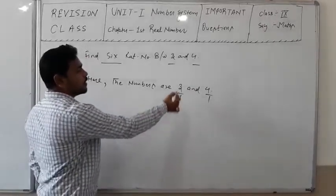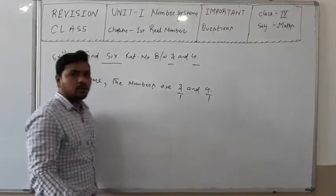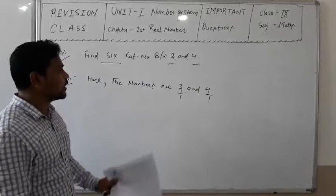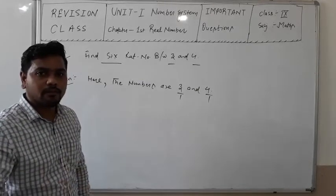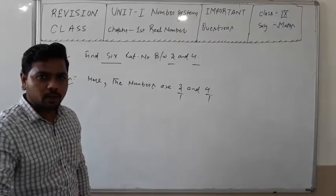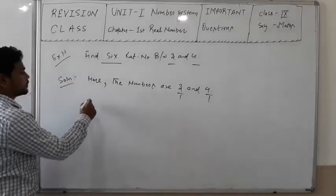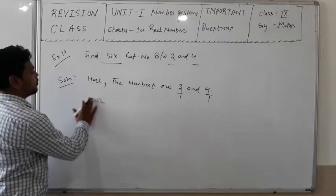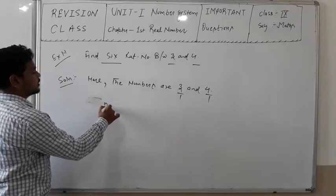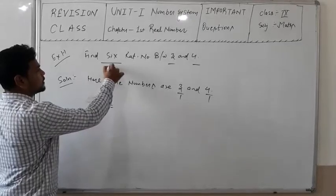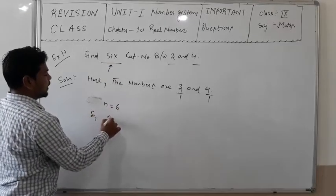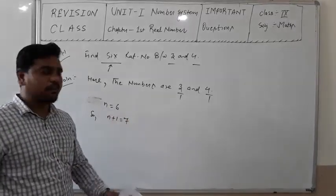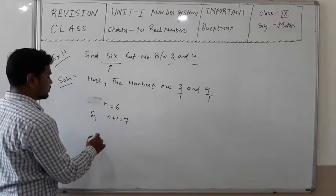Since we need 6 rational numbers between 3/1 and 4/1, we multiply by 7 on both sides in numerator and denominator. Here, n is equal to 6, so n+1 is equal to 7. We multiply both fractions by 7 over 7.